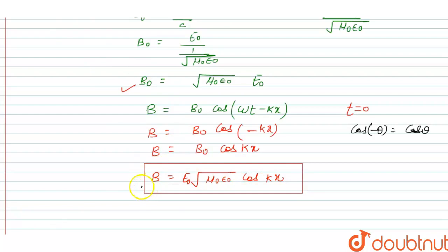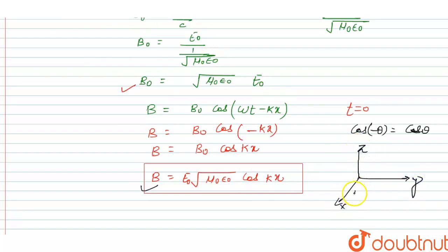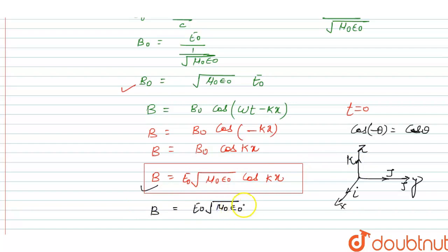Now we have to find the direction of the B vector. Looking at the coordinate axis with x, y, z (i, j, k): the electric field is along the j direction and the propagation wave vector is along the positive x direction. Therefore, the direction of the magnetic field must be along the k direction. So the final magnetic field is B = E0 √(μ0ε0) · cos(kx) · k̂.